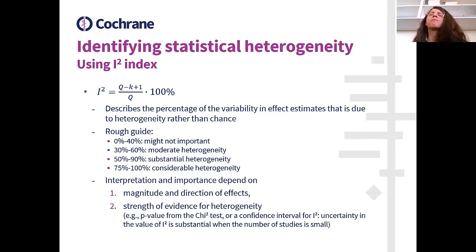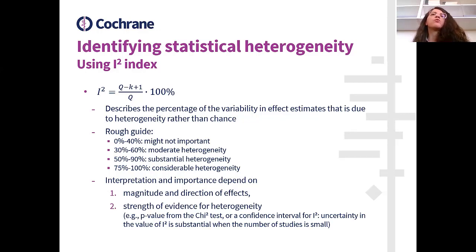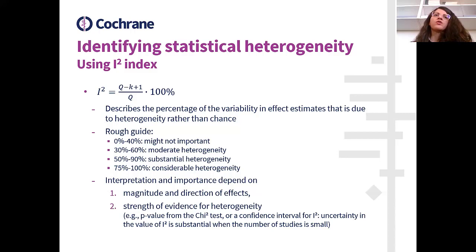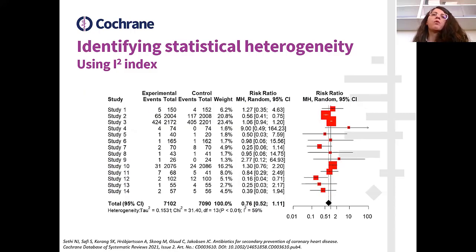As you can see, these thresholds overlap, which is one reason researchers struggle with interpreting I-square values. Even though I-square gives a picture of the percentage of variability, interpreting the I-square value alone is not enough. We need to check the magnitude and direction of individual effect estimates and the strength of evidence for heterogeneity. Returning to forest plot C: the I-square is 59%, which can be interpreted as either moderate or substantial heterogeneity.